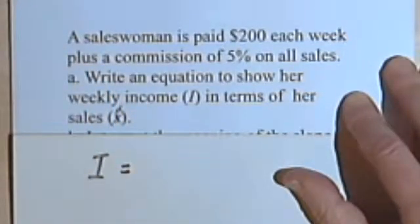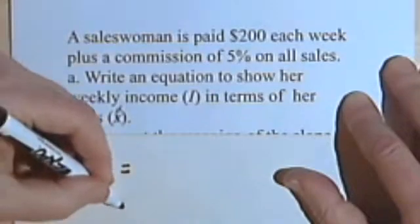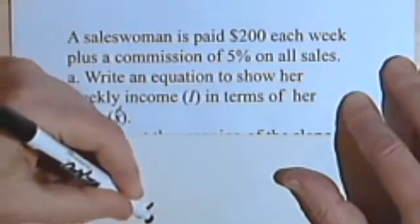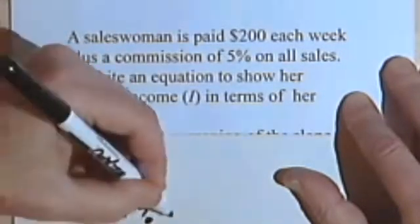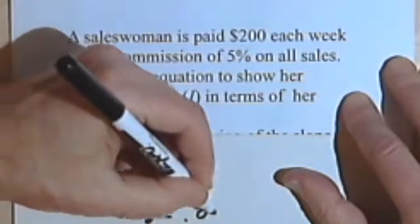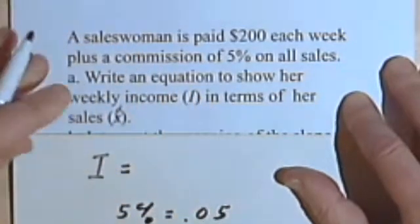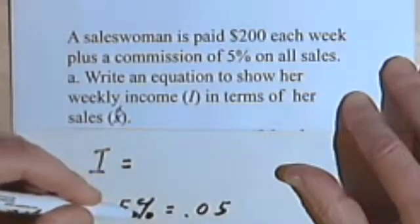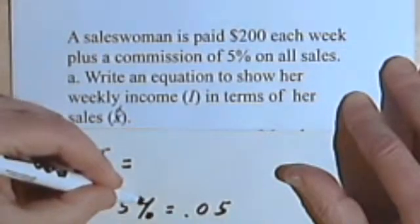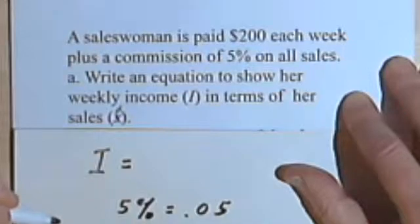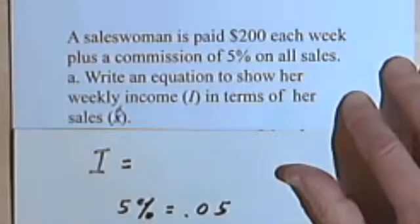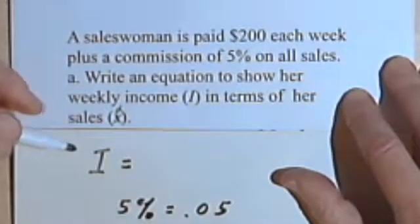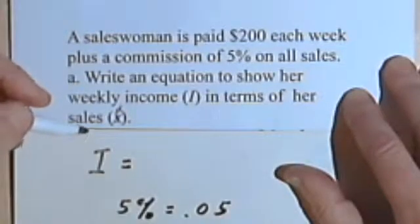Now, she's making 5%. When you're dealing with percentages, you want to turn them into decimals usually. So 5% is the same as .05. If you need to brush up on your understanding of percent and decimals, you're going to need to know that. So 5% equals .05. So what this means is, if she sells, let's say, $100 of merchandise, they will give her 5% of $100.